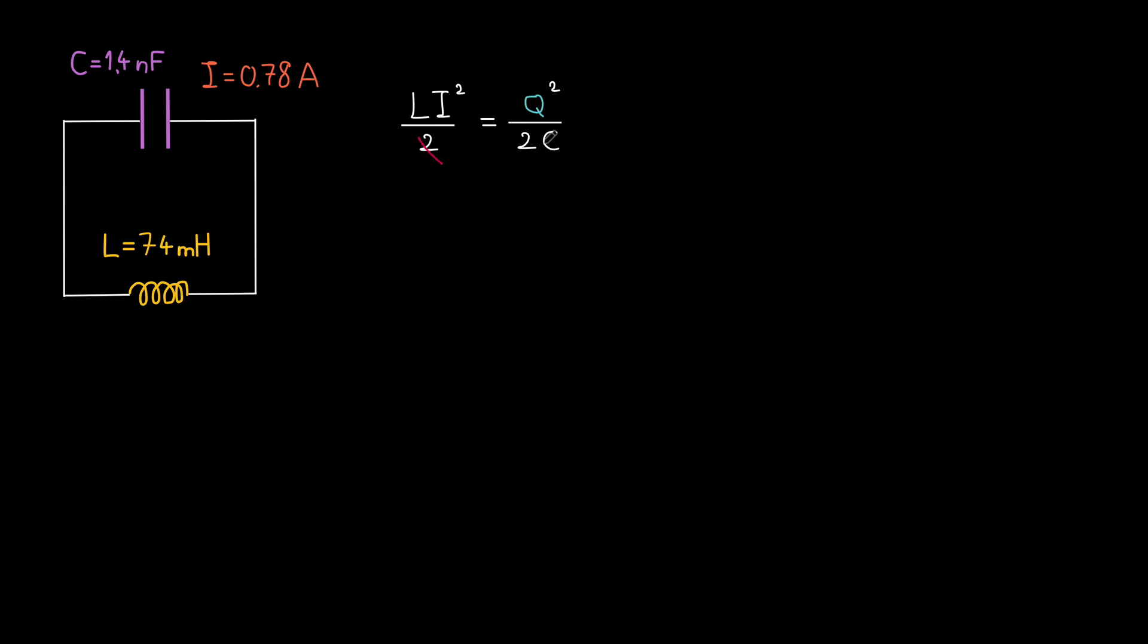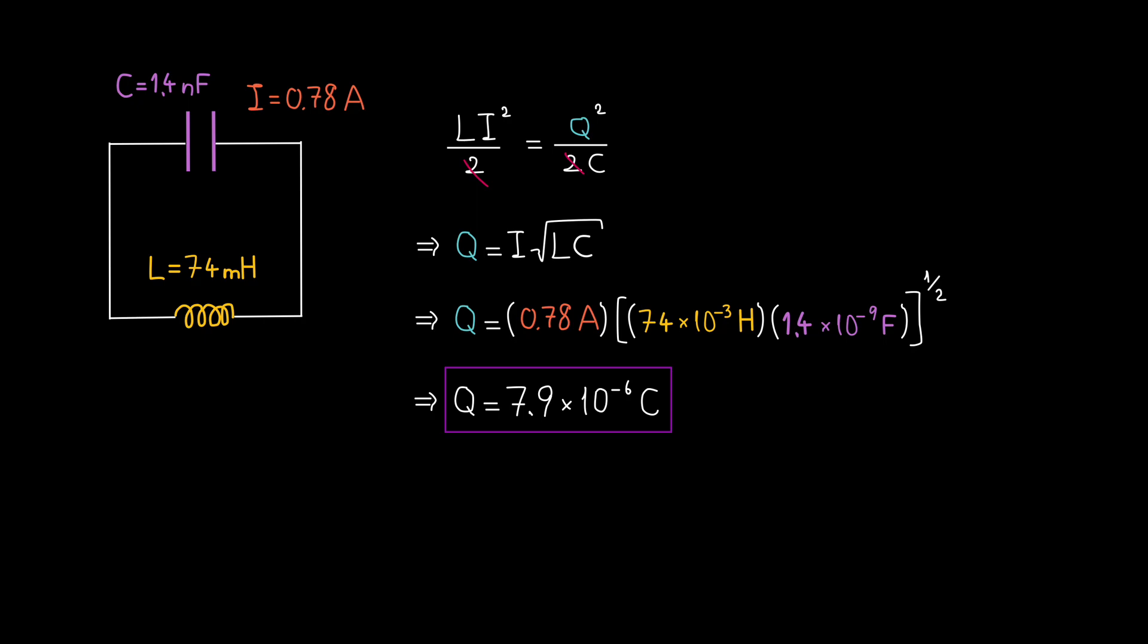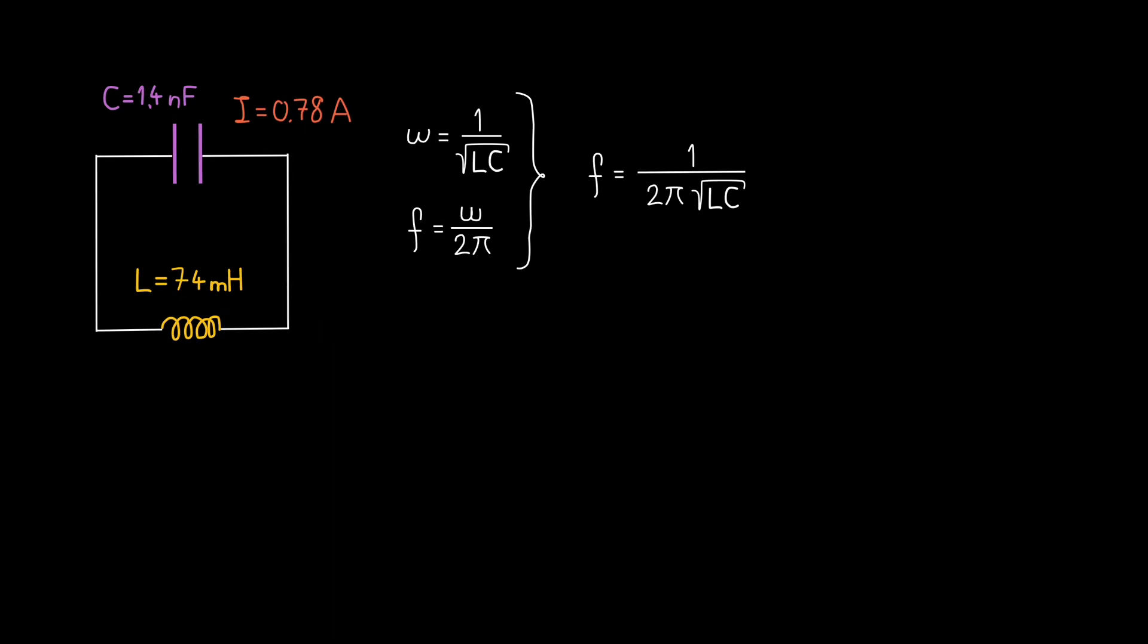Let's rearrange this equation and isolate Q. After some algebra, we get Q equals I times square root of LC. When we do the numerical substitution, we get Q equals 7.9 times 10 to negative 6 Coulomb or 7.9 micro Coulomb. The next question is,